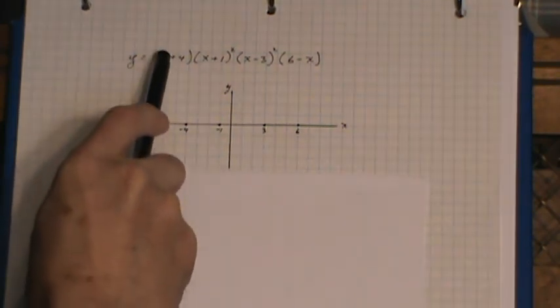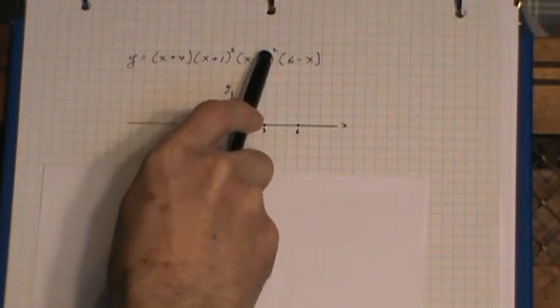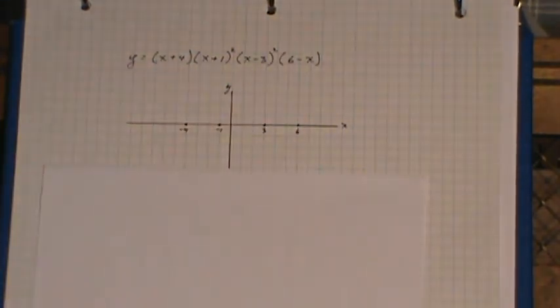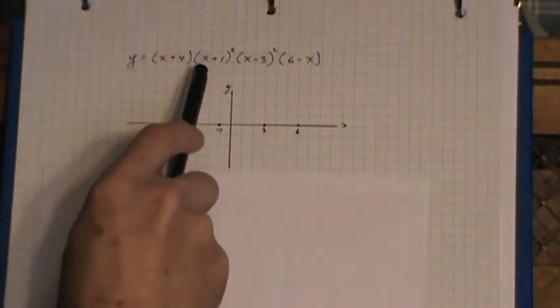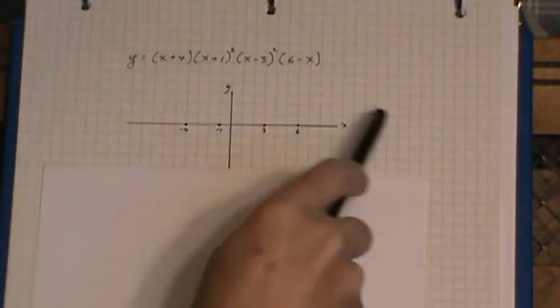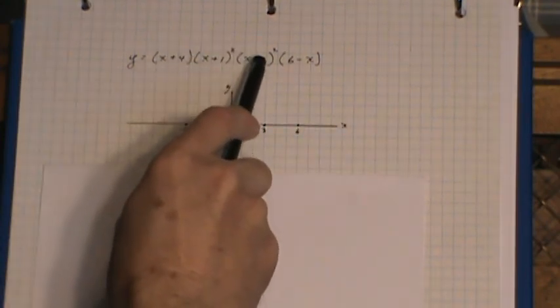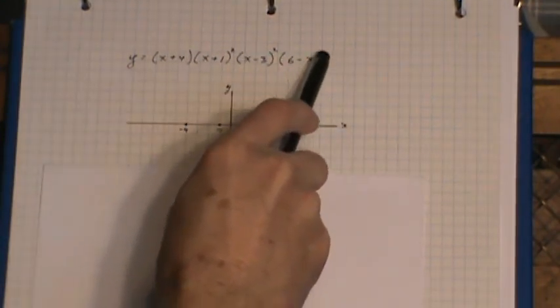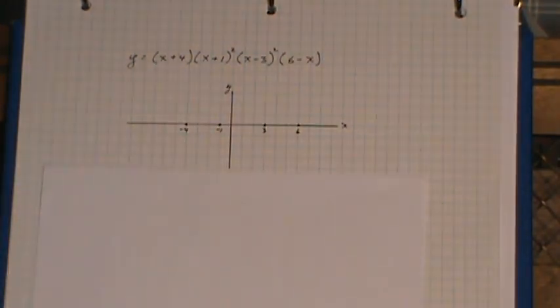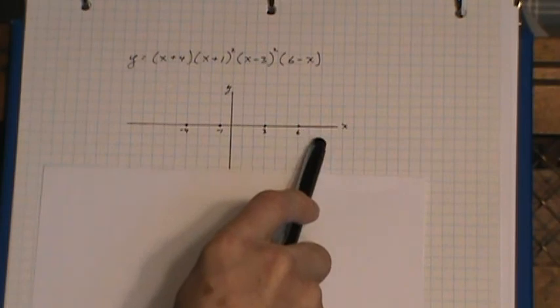I've got actually 1, 2, 3, 4, 5, 6 factors. So, it's a 6th order polynomial. Looking at the factors carefully, if you pick a number bigger than 6, you're going to find all these factors are positive except for that one. Meaning, the leading term is negative. It's going to end going down.